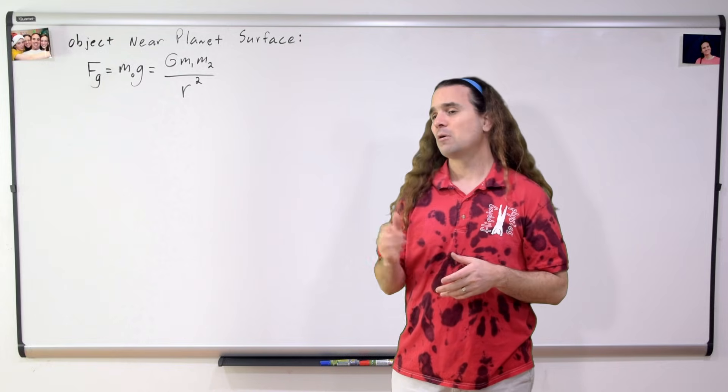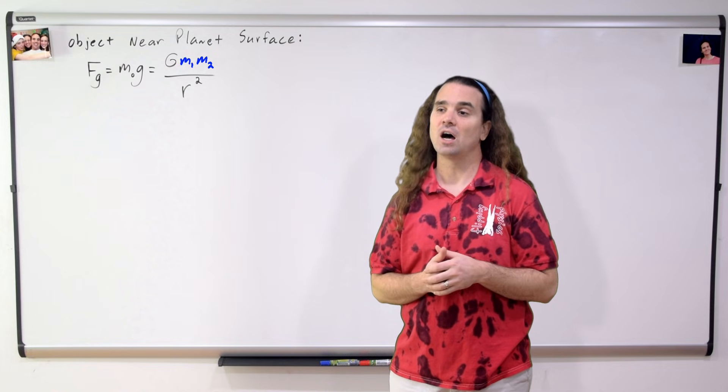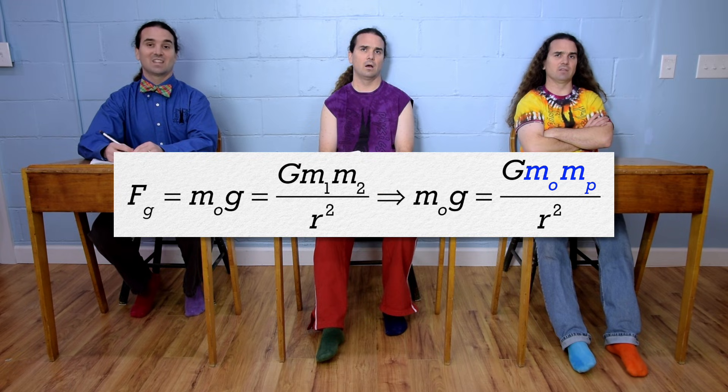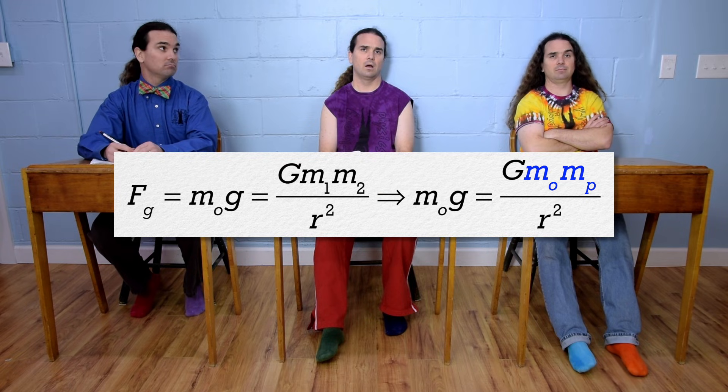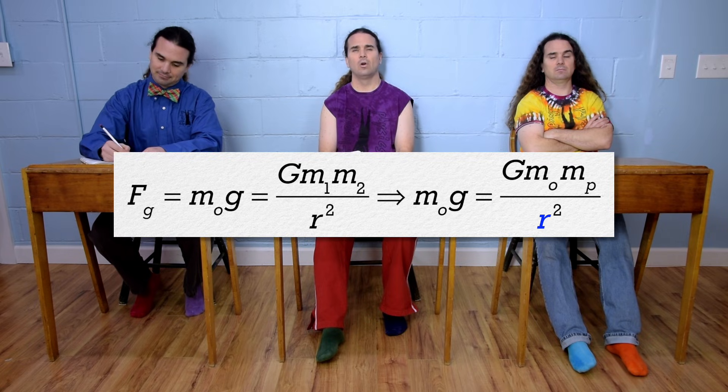In this case, Bo, what would mass 1 and mass 2 be equal to in Newton's universal law of gravitation? The two objects would be the mass of the object and the mass of the planet. Bobby, what would r, the distance between the centers of mass of the two objects, be equal to?